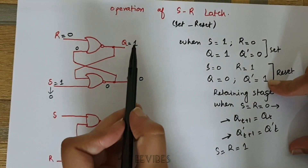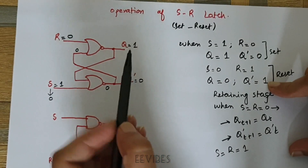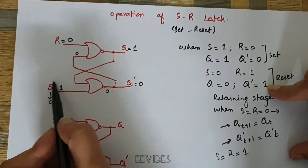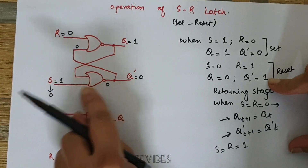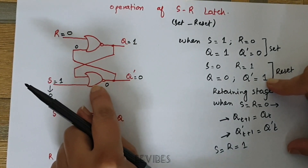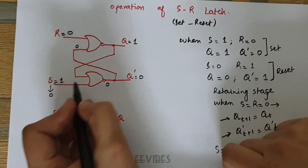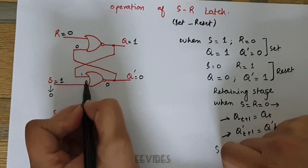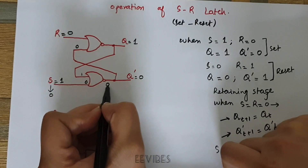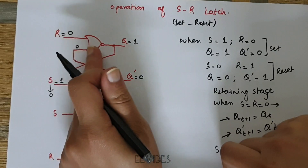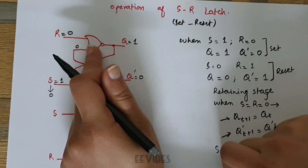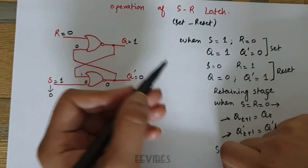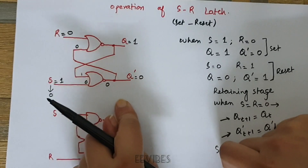The previously set values are Q equal to 1 and Q-bar equal to 0. When you switch the input of the NOR gate making S equal to 0, the value 1 is being fed in, so 1 NOR 0 produces output equal to 0. This 0 is fed back to the upper NOR gate, and 0 NOR 0 produces output equal to 1. So basically the latch is retaining its previous value.